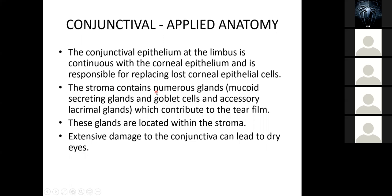The conjunctiva has an epithelial layer and a stroma. The function of the stroma is that it contains numerous glands — mucoid-secreting glands and goblet cells, and accessory lacrimal glands which contribute to the tear film. The lower layer of the conjunctiva has the mucoid-secreting cells, or goblet cells, that help contribute to the secretions lying in the eye, ensuring that the eye is always moist. Extensive damage to the conjunctiva can lead to dryness when it affects these goblet cells or the stroma layer. Damage to which part of the conjunctiva leads to dryness? The answer is the stroma.